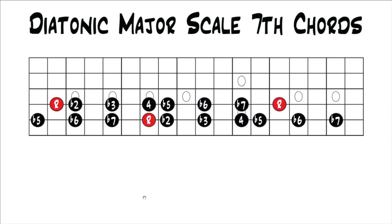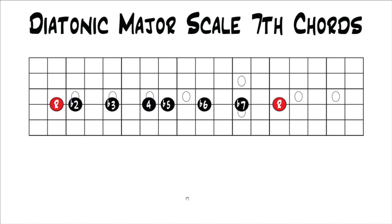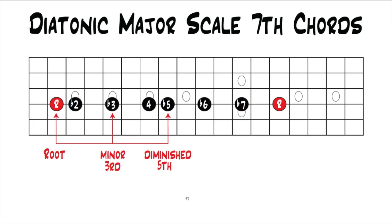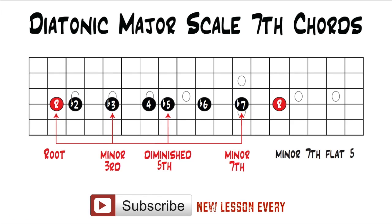Now rearranging the intervals again — I'm just moving to the new string to give us more room. Starting on the 7th note of the major scale, that becomes our new root. That gives us root, flat 2, flat 3, 4, flat 5, flat 6, flat 7. Building a triad off the 7th note gives us a diminished triad. Stacking another 3rd to get to our 7th adds a minor 7th. So that gives us root, minor 3rd, diminished 5th, minor 7th — a minor 7 flat 5 chord. Building a 7th chord off the 7th note of the major scale gives us a minor 7 flat 5 chord.